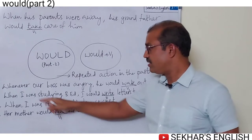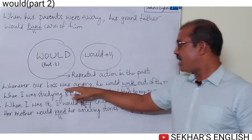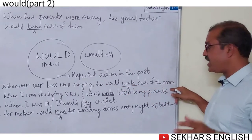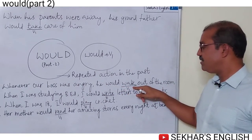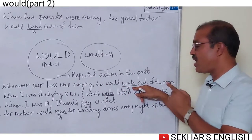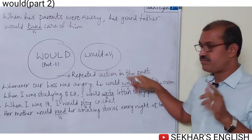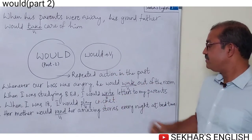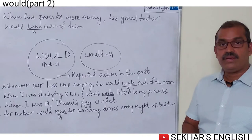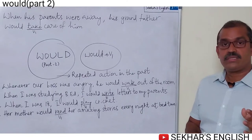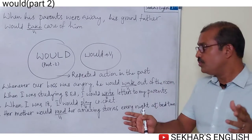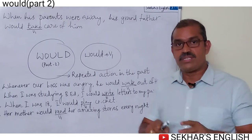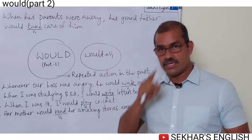Second example: 'Whenever our boss was angry, he would walk out of the room.' Again, we have used the base form of the verb — 'walk,' V1 form, 'would' plus V1. It means our boss walking out of the room whenever he was angry is the repeated action in the past.